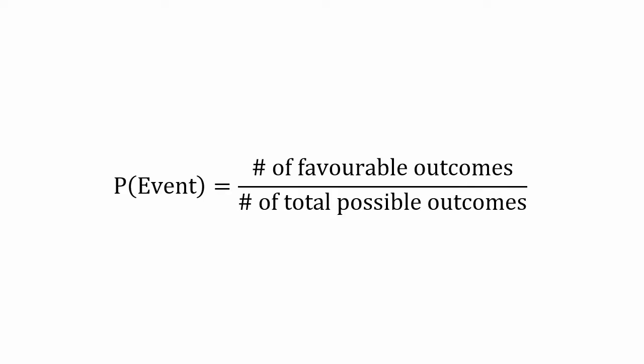Now this problem involves basic probability, which means it shouldn't be too hard, because we know that the probability of an event equals the number of favorable outcomes divided by the number of total outcomes. Except it is a bit trickier than it actually sounds.